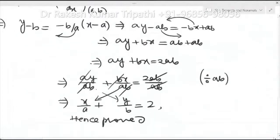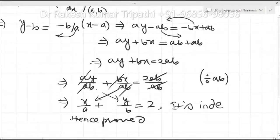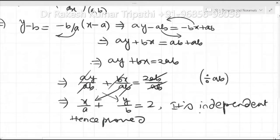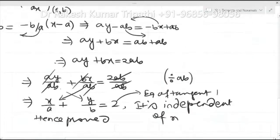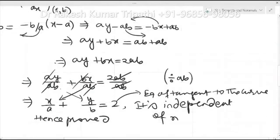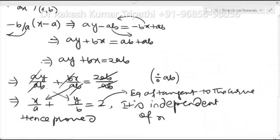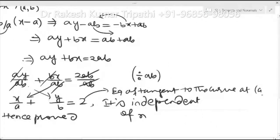This is the equation of the tangent to the curve at (a, b), which is independent of n. Hence it is proved.